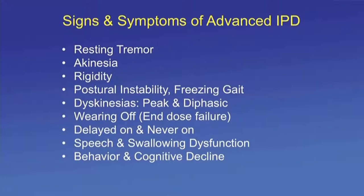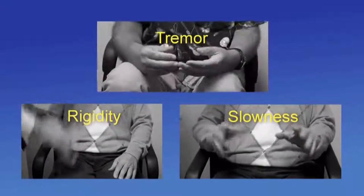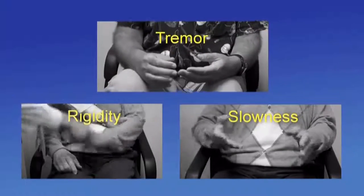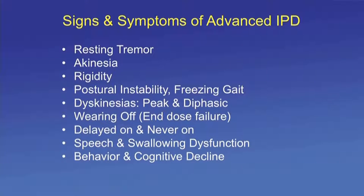Signs and symptoms of advanced Parkinson's disease include prominent resting tremor that becomes refractory — occurring when wearing off. Akinesia, slowness, and rigidity all worsen when the patient is off. Postural instability and freezing are more common in late advanced patients. Dyskinesias are a hallmark of motor complications along with wearing off — more common in advanced disease. Peak dyskinesias occur when plasma level is higher; diphasic dyskinesias occur more in the legs when wearing off. Wearing off is much more common in advanced patients and is a difficult management problem.